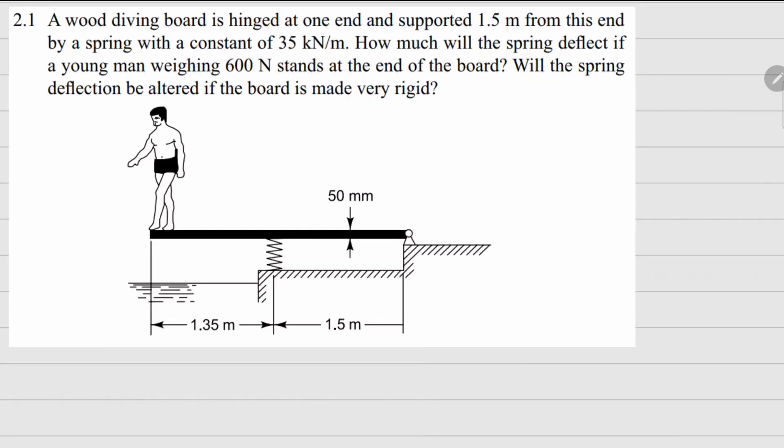This one is problem 2.1. There is a diving board which is hinged at this point right here and there is a spring here for which the k value is given, which is 35 kilonewtons per meter. The weight of this person right here is given as 600 newtons and we need to figure out how much this spring is going to deflect.